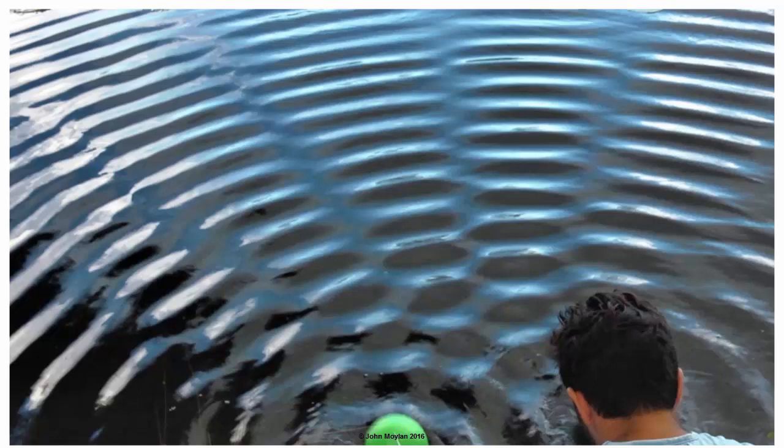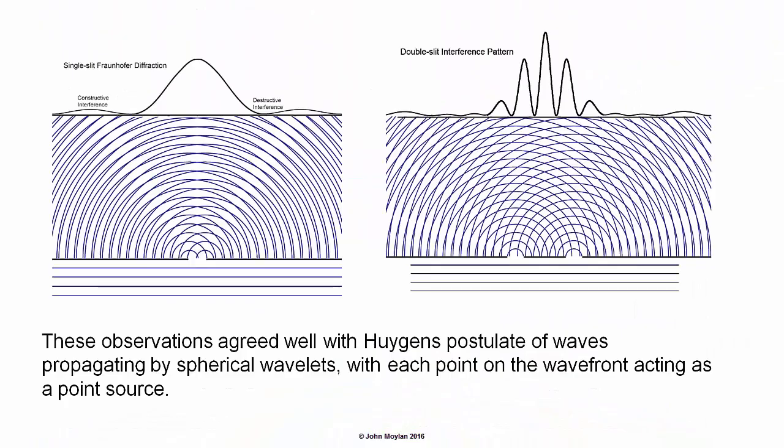And Young had already demonstrated this in water. The waves from the two slits, or in Young's case pinholes, were causing an identical interference pattern to that which he had previously observed in water. These observations by Young agreed well with Huygens' postulate, that waves propagate as a series of spherical wavelets produced at each point along a wave front.